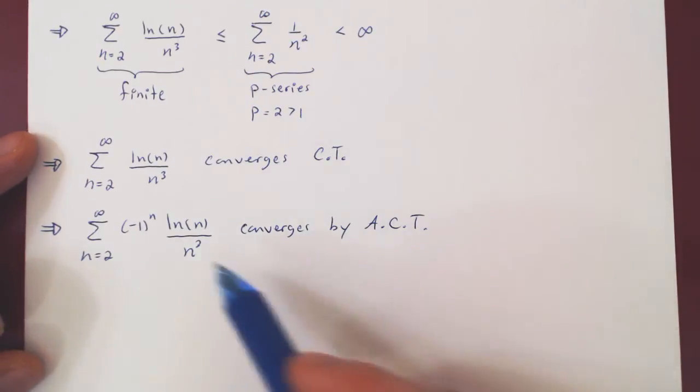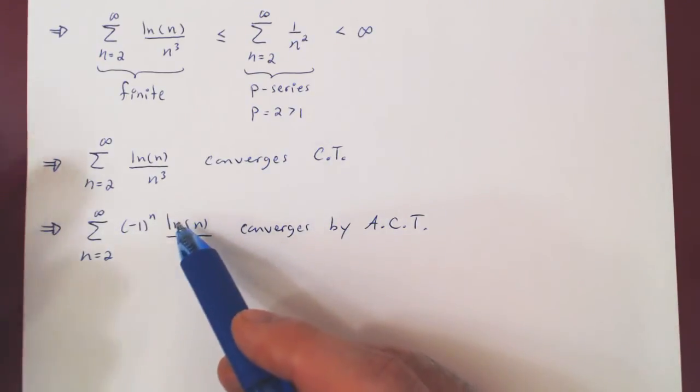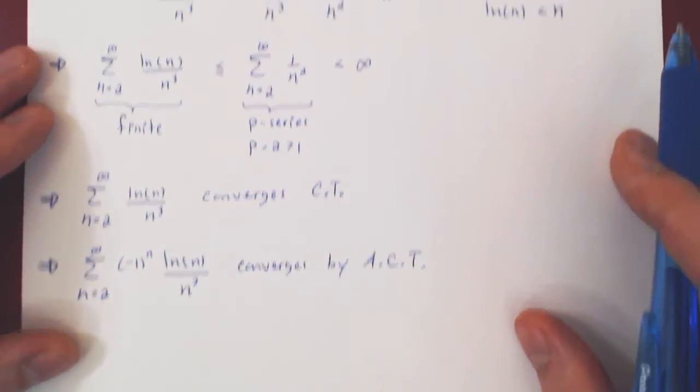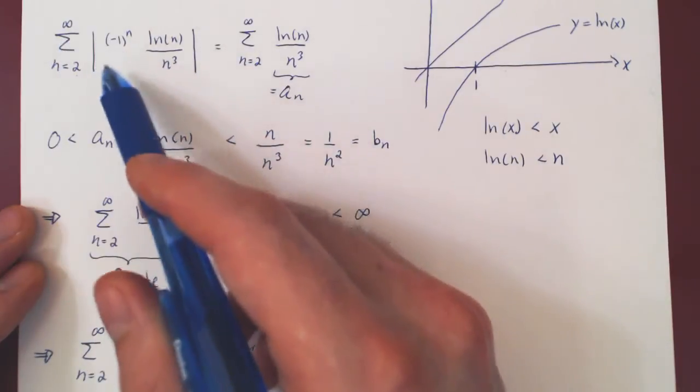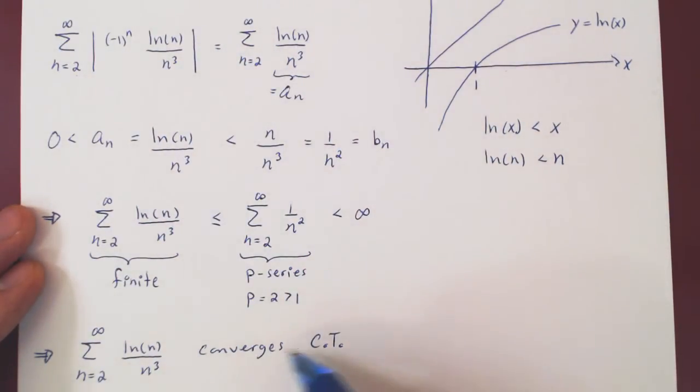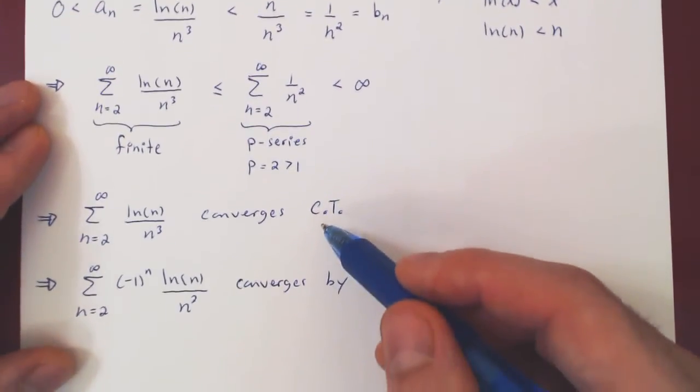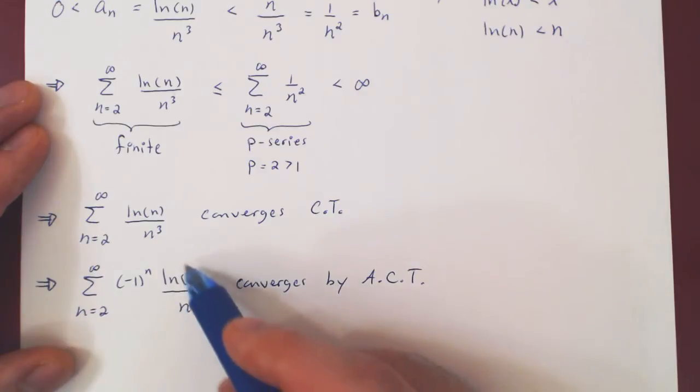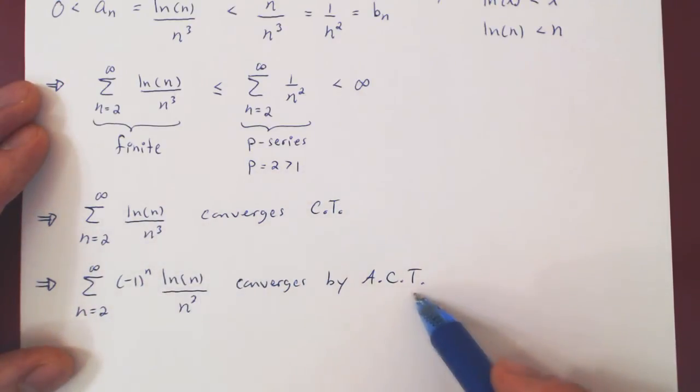And so here, by bypassing the initial series, we didn't have to use the alternating series test. We were able to prove, quite easily, that the series of the absolute value of the terms, converges by the direct comparison test. So we have absolute convergence, so the series without the absolute value, so the initial series also converges.